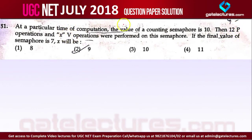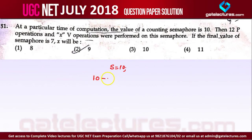The question says: 12 P operations and X V operations were performed on this semaphore. If the final value of the semaphore is 7, then what is the value of X? This is a simple equation. The initial value of the semaphore was 10. After 12 wait operations, the value of the semaphore is decreased by 12. Then X V (signal) operations are performed, each increasing the semaphore value by 1, giving plus X. The final value is 7.